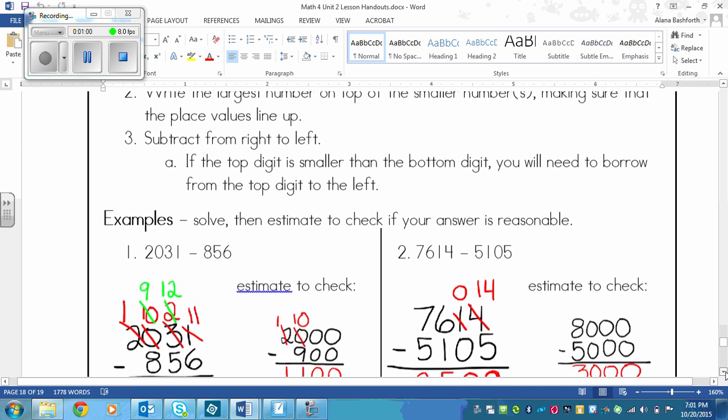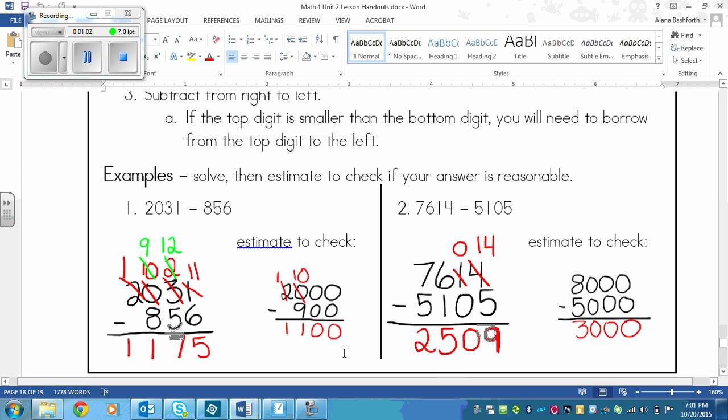We've got some examples down here. And this looks a lot like the last lesson, but look carefully and you can see that it's not. So in this example, we have to solve and then we are also estimating to check to make sure our answer is reasonable. So we've got 2031 minus 856.